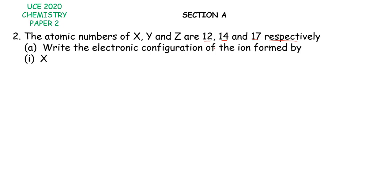Write the electronic configuration of the ion formed by X. So that means our X corresponds to 12 because they say it respectively. So X has 12 as the atomic number, Y has 14 and Z will have 17.